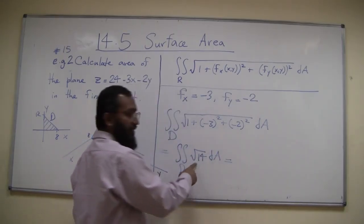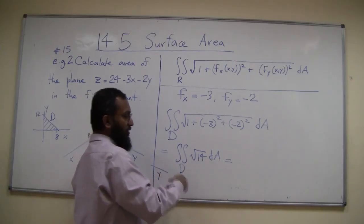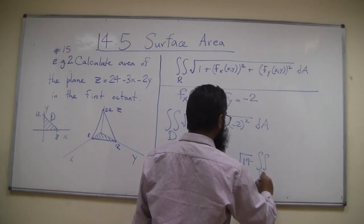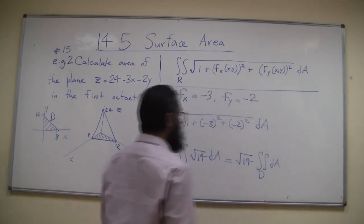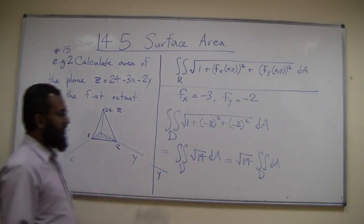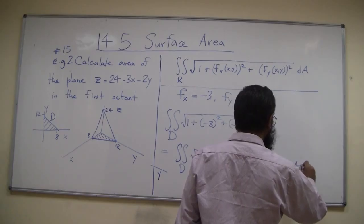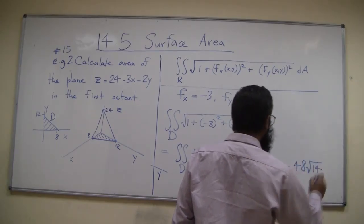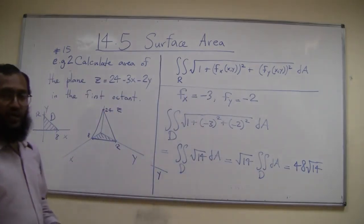Since the integrand is a constant, you can pull out the square root of 14. Square root of 14 times the integral over region D, dA, which is the area of this region. The area of this region is a triangle of width 8 and height 12, so 8 times 12 over 2 is 48. This is 48 square root of 14.